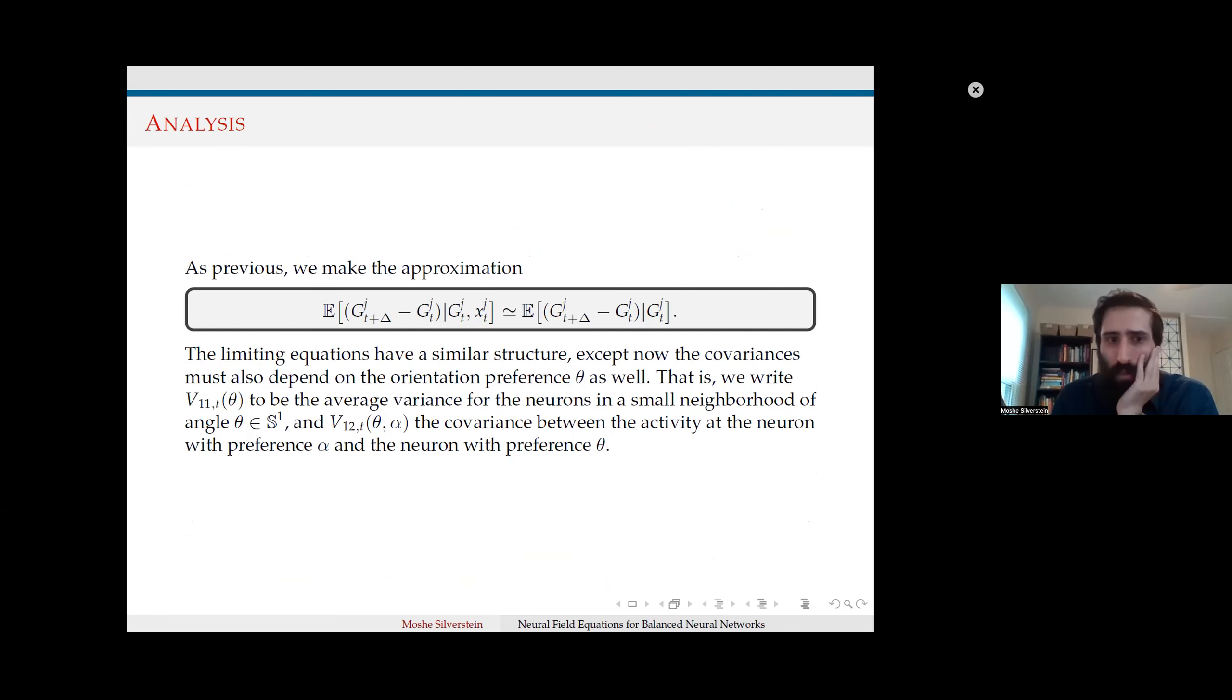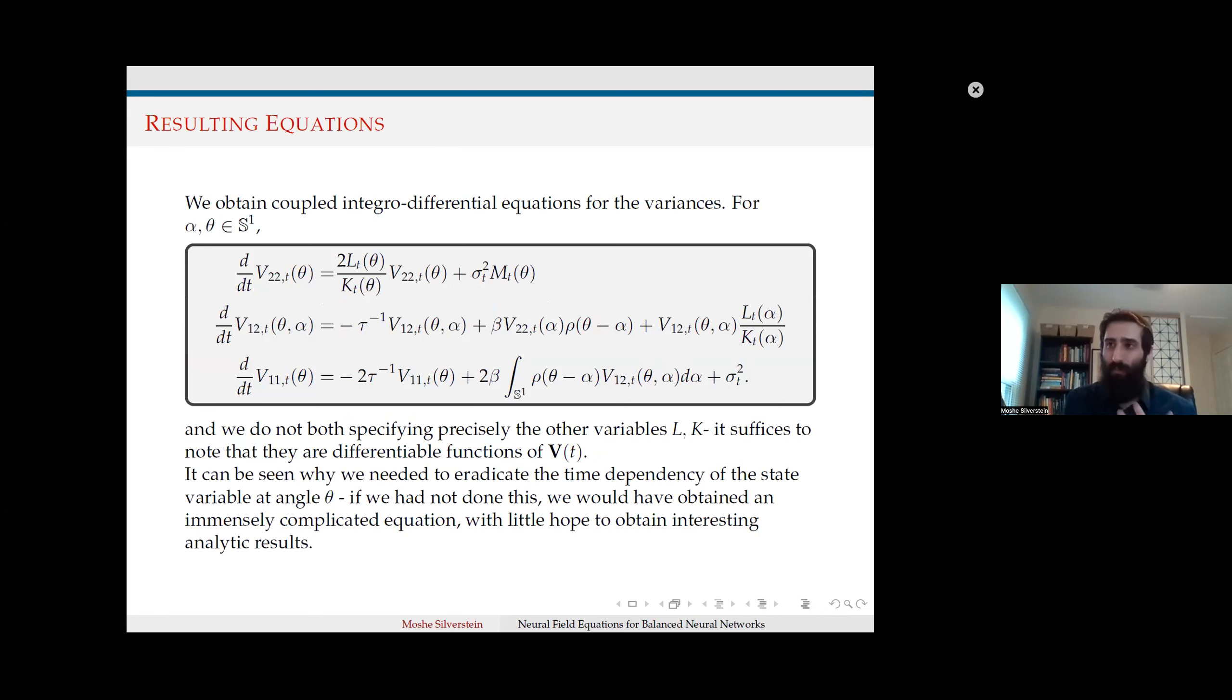Making the same assumption as previously, we approximate that the expected increment in the field is independent of the x variable. This produces limiting equations similar to before, except now the covariance depends on orientation. We obtain coupled integral-differential equations for the variance. These equations include spatially dependent terms and although they appear somewhat complicated at first glance, they're actually quite tractable using standard dynamical methods. They're reminiscent of the Wilson-Cowan equations in that they're just convolutions over the various variables.